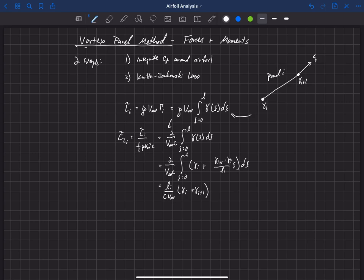we end up with L sub i over C V infinity times gamma i plus gamma i plus 1. Okay, so this is our differential lift that is produced by that panel. So to get the total lift coefficient, we simply need to sum all of the influence from all of the panels.